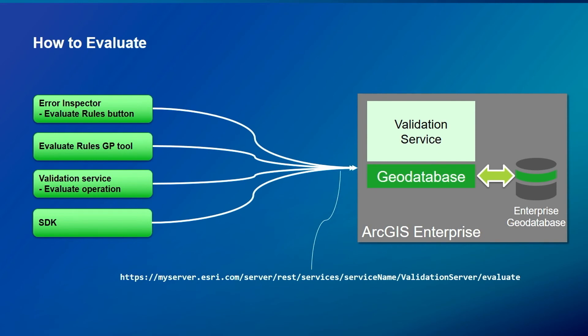You can trigger the evaluate operation through four mechanisms: open the error inspector UI and click the evaluate rule button; run the GP tool called 'evaluate rules'; open server manager and invoke the evaluate operation; or invoke through the SDK. All four essentially send a URL to the server, and the validation service runs its validation process, interacts with the database, and returns results to the client.